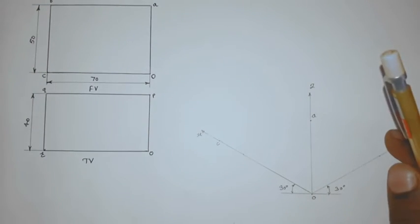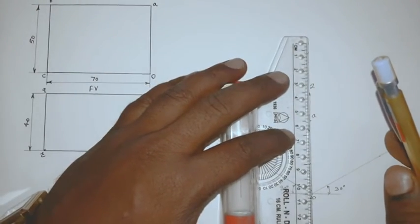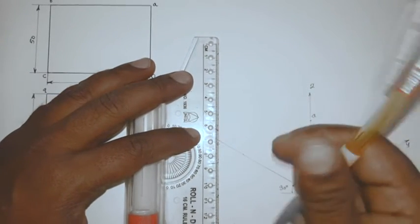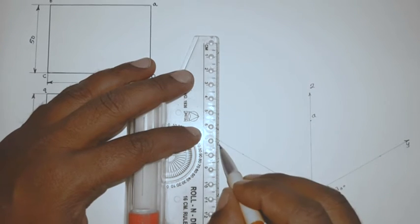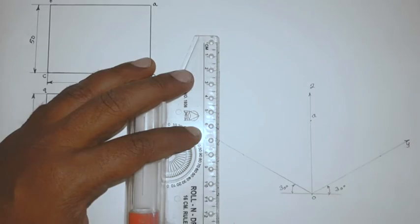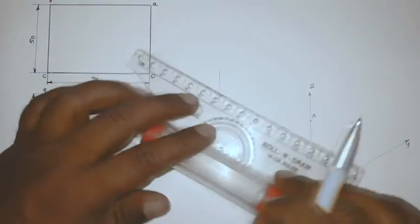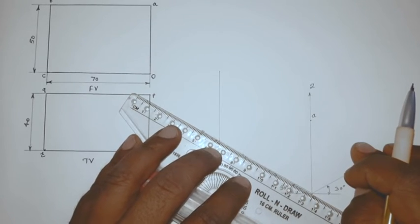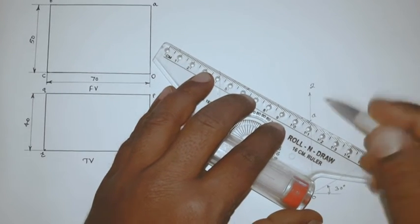So parallel to this OA, draw here a line of height, that is given height, 50mm height. Then through O, draw a parallel line to this OX. So after this, you will get point, that is point B.